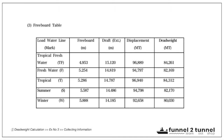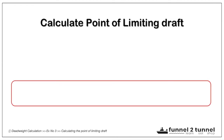Let us obtain certain data from the trim and stability booklet, considering only the winter marks and limits. The winter mark draft is 14.185 meters, and the winter displacement of the ship is 92,658 tons. Now let us calculate the point of limiting draft in the voyage.